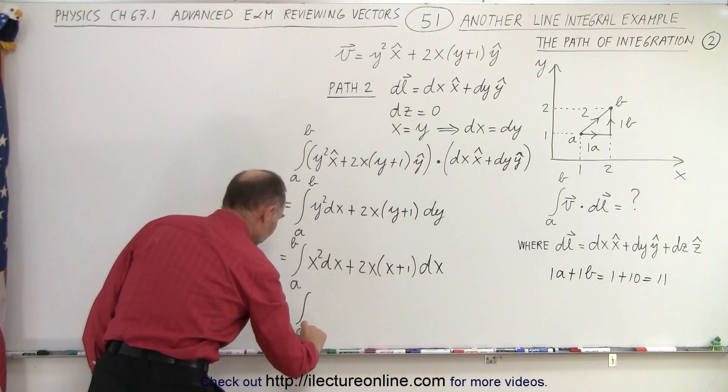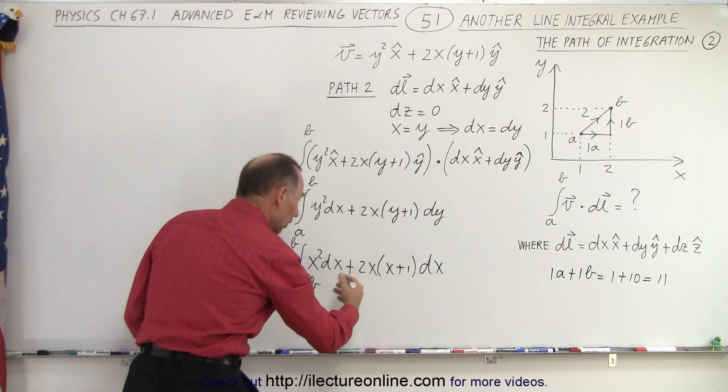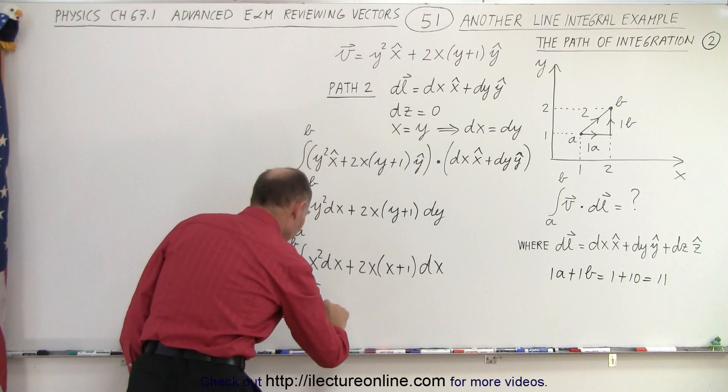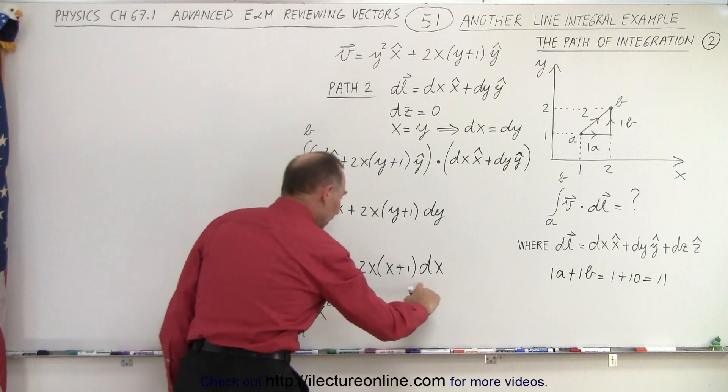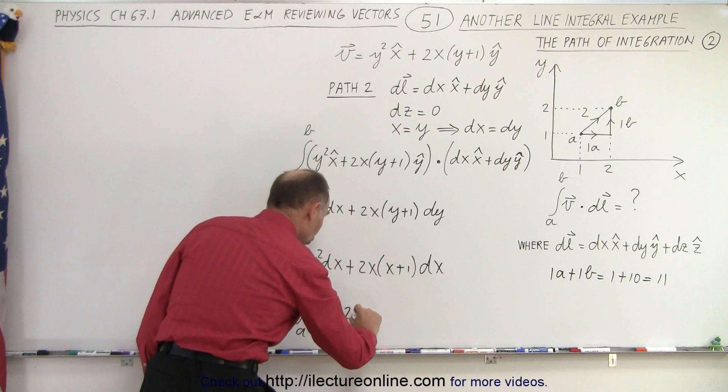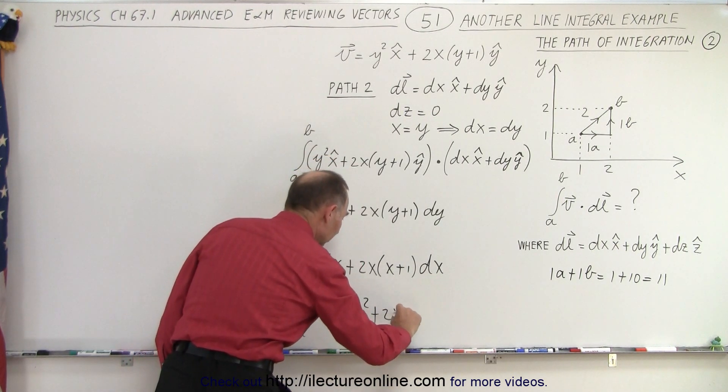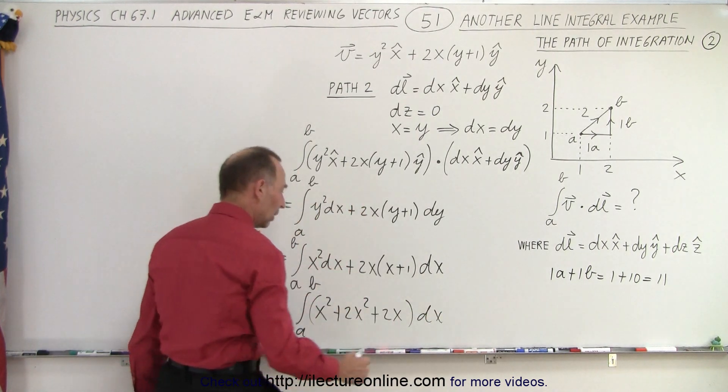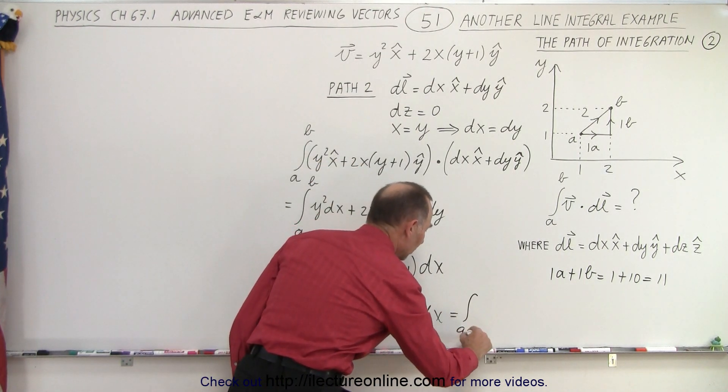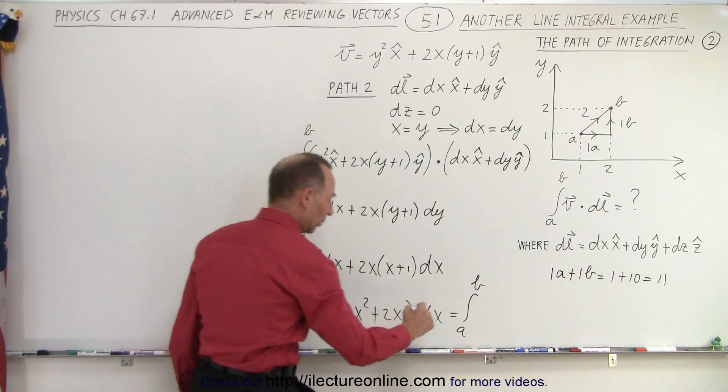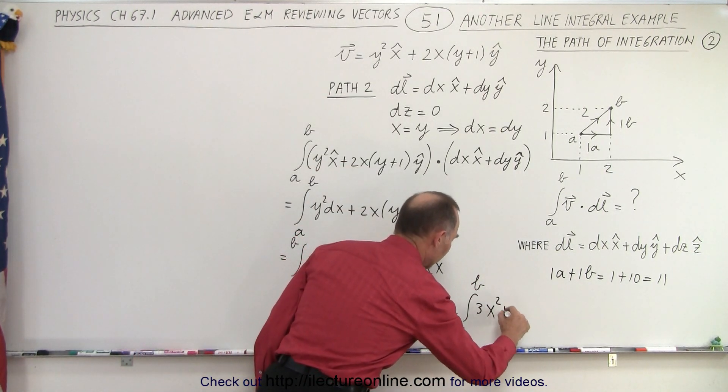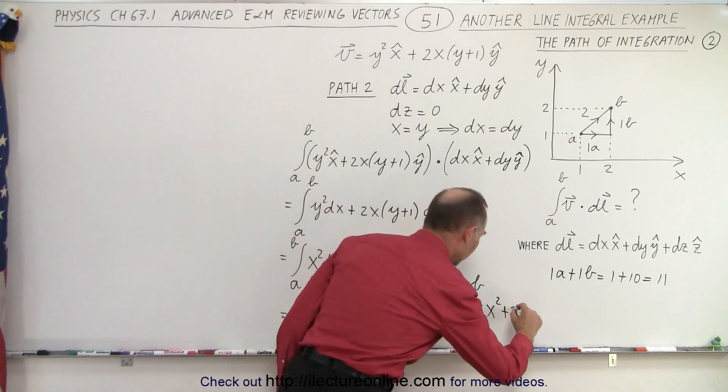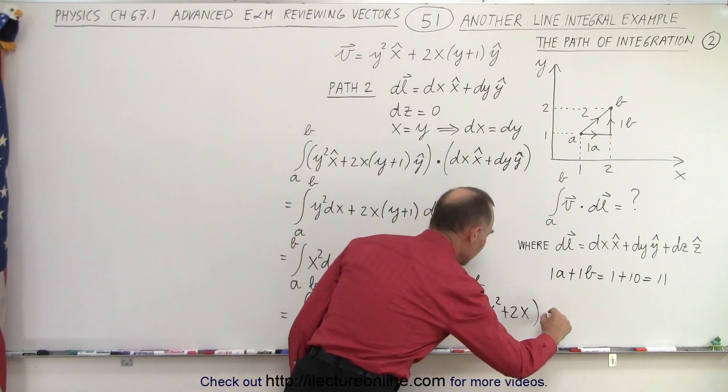So this is equal to the integral from A to B of, we can factor out dx and write this as x squared. We can multiply this out, plus 2x squared plus 2x times dx. And of course we can combine the x squared, so this is equal to the integral from A to B of 3x squared plus 2x times dx.